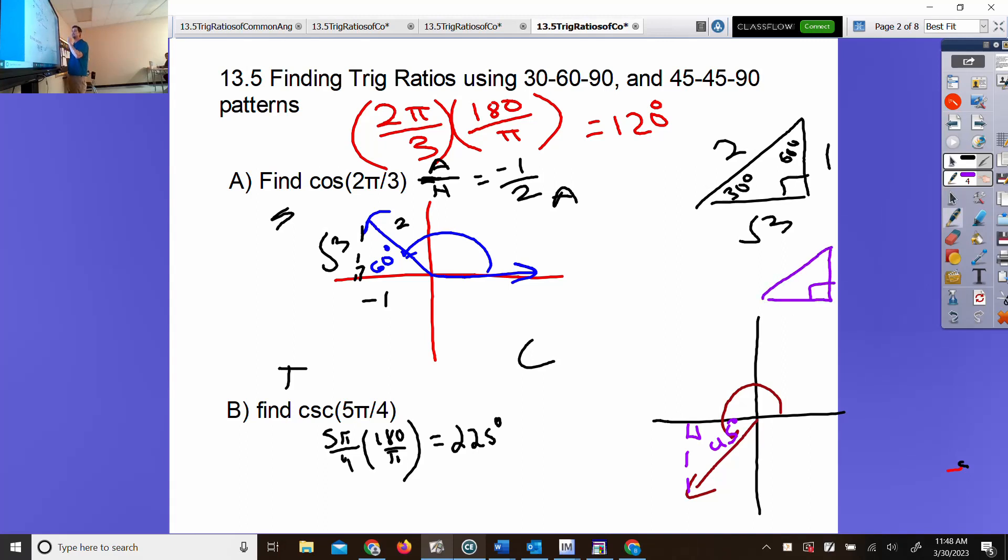What were the numbers on 45-45-90? 1, 1, root 2. At any 45-degree angle, what length is opposite? 1. Direction matters, it's negative. At either 45-degree angle, what is next to it? Also 1, but negative. What's the hypotenuse? Root 2. Can a hypotenuse be negative? Nope. They're always positive.